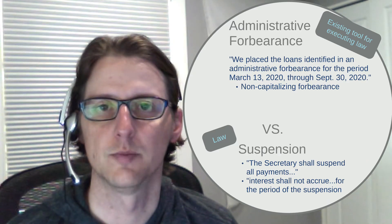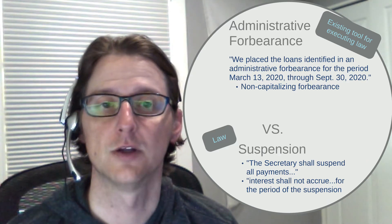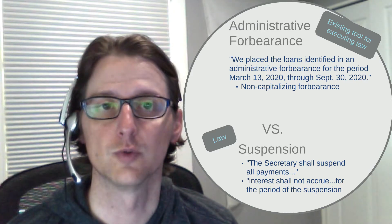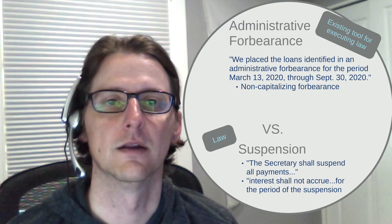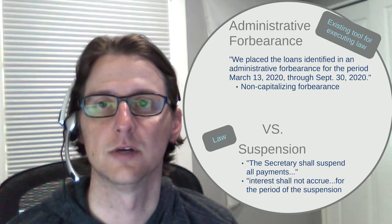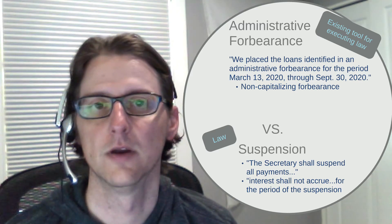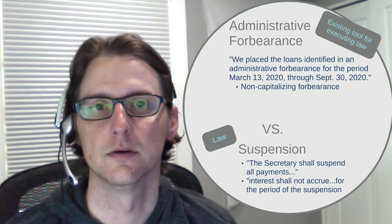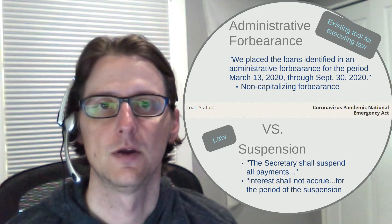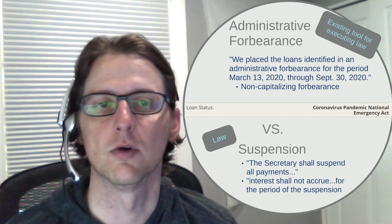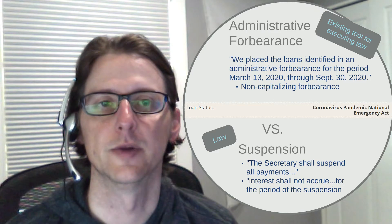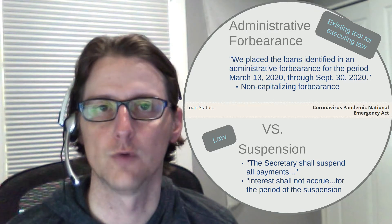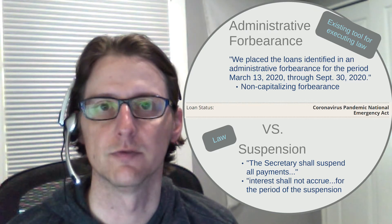When the loan servicers use an administrative forbearance, it essentially puts your loans on pause. In this case, the law specifies that no interest will accrue during this period, and there should not be any capitalization of interest that existed prior to the suspension taking place. You should see — or maybe you'll see, depending on your loan servicer — a status in your account that talks a little bit about why your loans are in this forbearance, specifically this administrative forbearance.